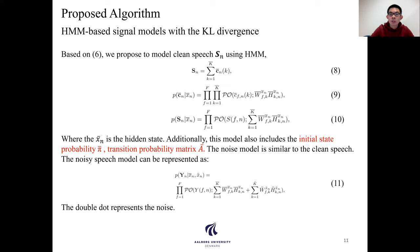Additionally, the model also includes the initial state probability pi bar, and the state transition probability matrix A bar. And the noise has a similar model for noise.